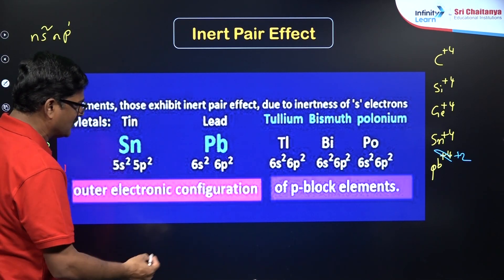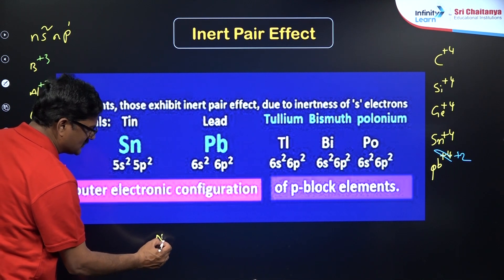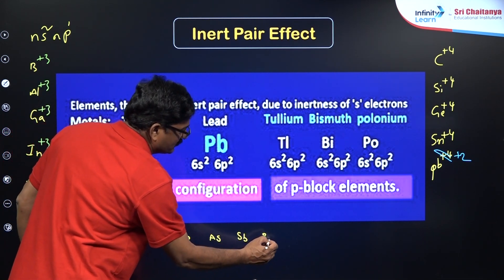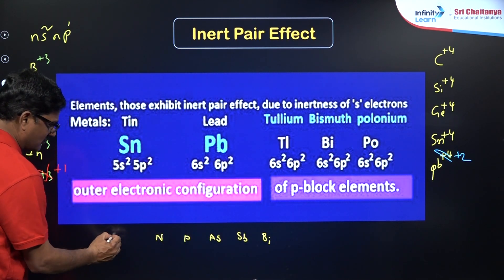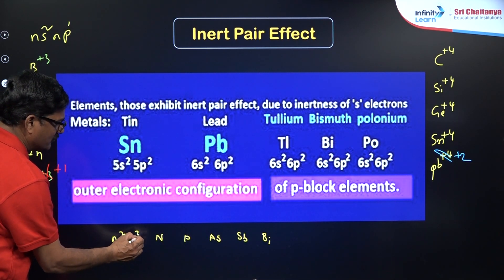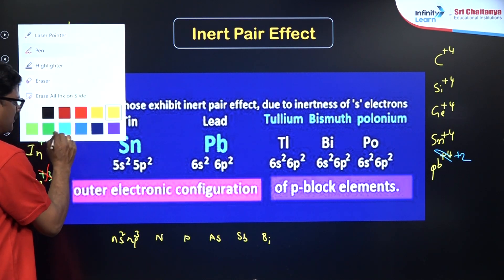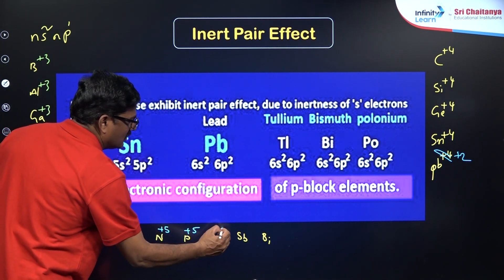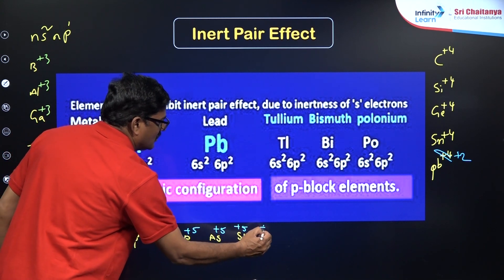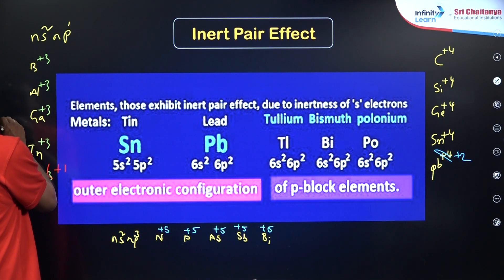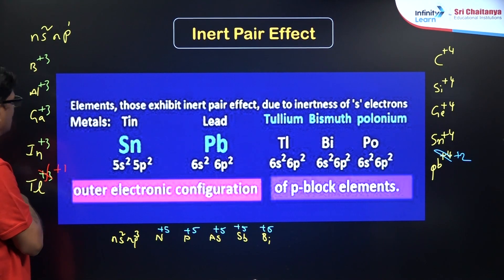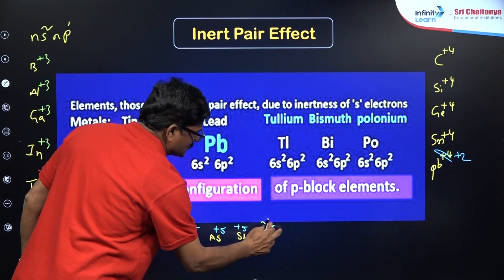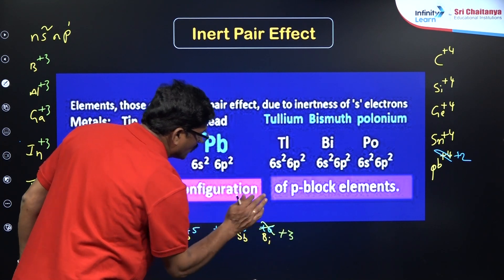Similarly, in group 15 elements — nitrogen, phosphorus, arsenic, antimony, and bismuth — they have the general electronic configuration NS², NP³, so they are expected to show a +5 oxidation state. But bismuth, due to the inert pair effect, does not show a +5 oxidation state; instead it shows a +3 oxidation state. So the +3 oxidation state is more stable for bismuth.